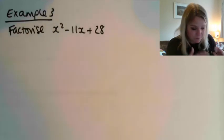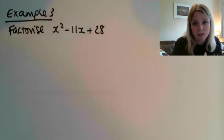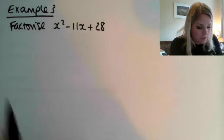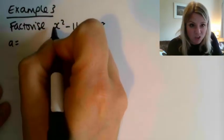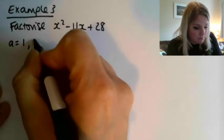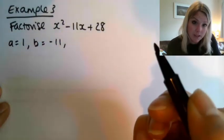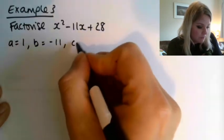First thing to do, if you remember, is to write out what the a, b and c values are. So a is always the number in front of the x squared term, there's nothing here, that's the same as a 1. b is the number in front of the x, so minus 11. And c is the number by itself, so that's 28.